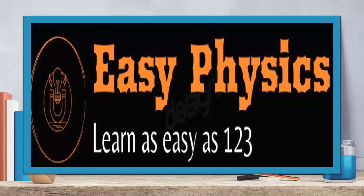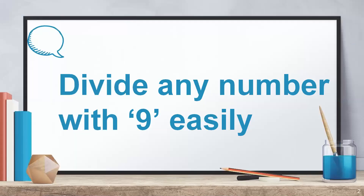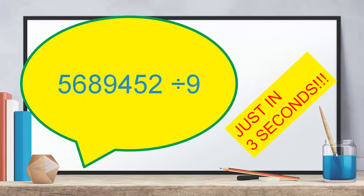Good day to all of you. Welcome to EC Physics — learn physics as easy as one to three. Through this channel, we discuss physics topics as well as some math tricks so that your problem solving in physics becomes easier. In today's video, I'm going to discuss an easy math trick through which you will be able to find out the quotient and remainder of any number divided by nine in a very easy and quicker way. After watching this video, you will be able to find the answer for such a long digit in three seconds or less.